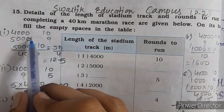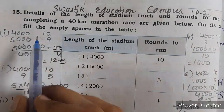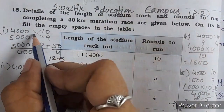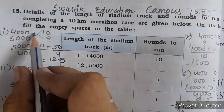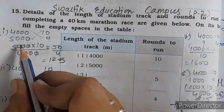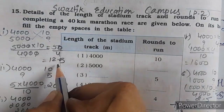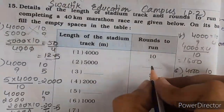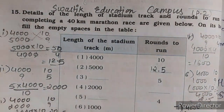Hum cross multiplication karenge. Jis line mein two numbers hain, usko hum upar lenge. Is tarah se cross multiply karenge — 5000 and 10 oopar, 4000 divide mein. 5000 into 10 divided by 4000 — zeroes cut karenge, to 50 by 4 bachega. So answer aega 12.5. Hum yahan likhengi ki woh 12 and half rounds maarne padenge.